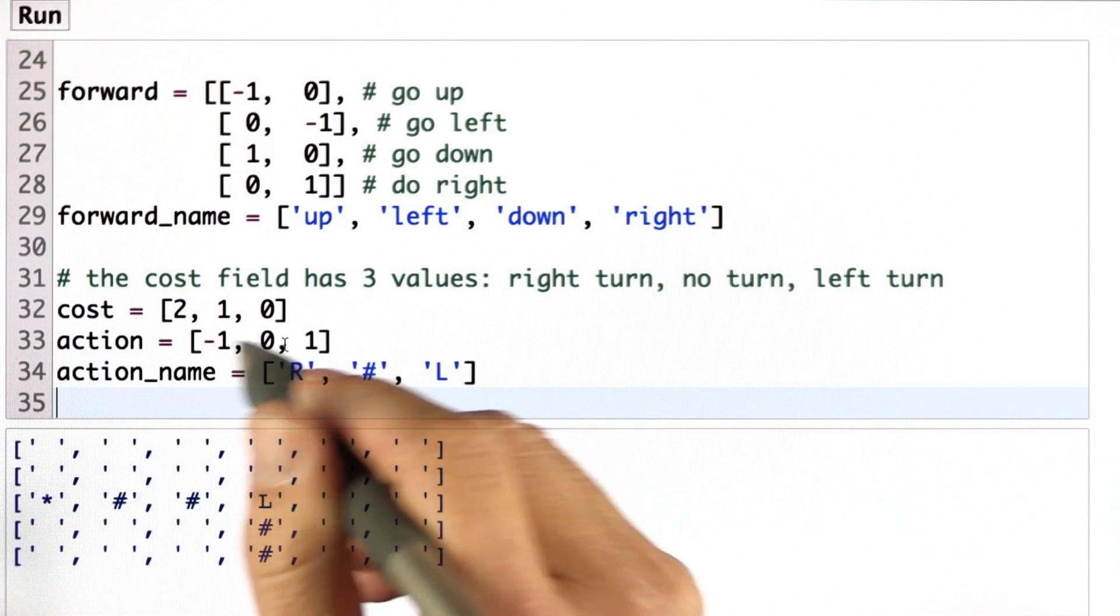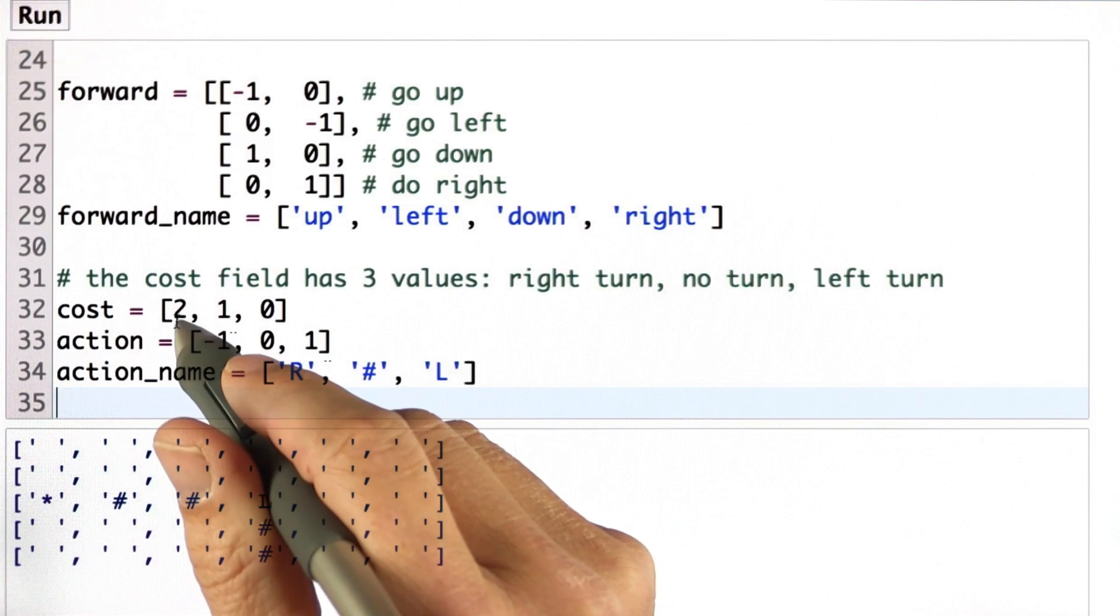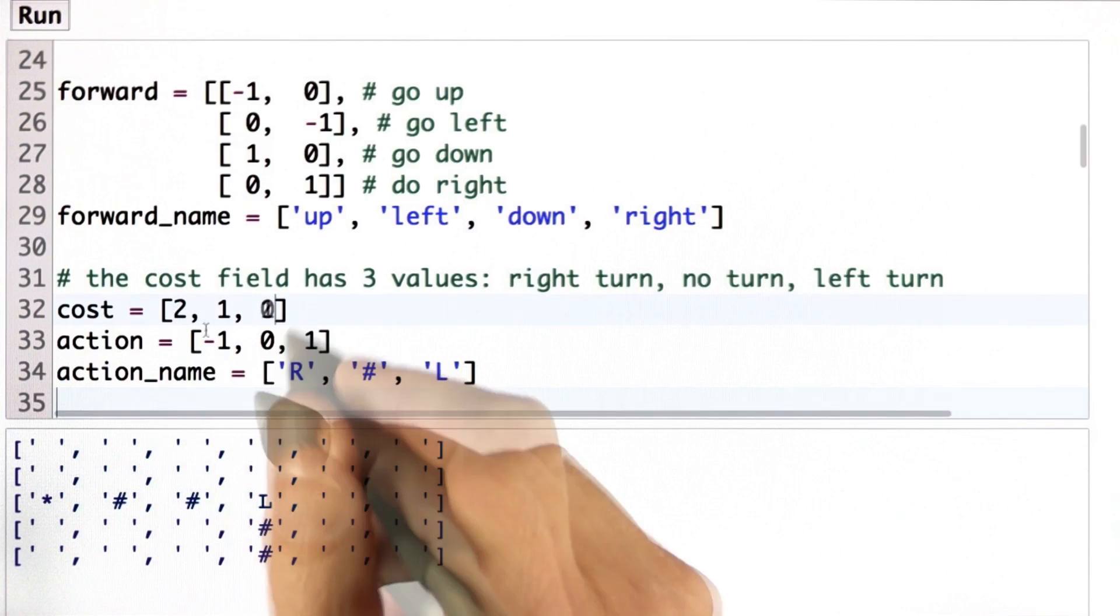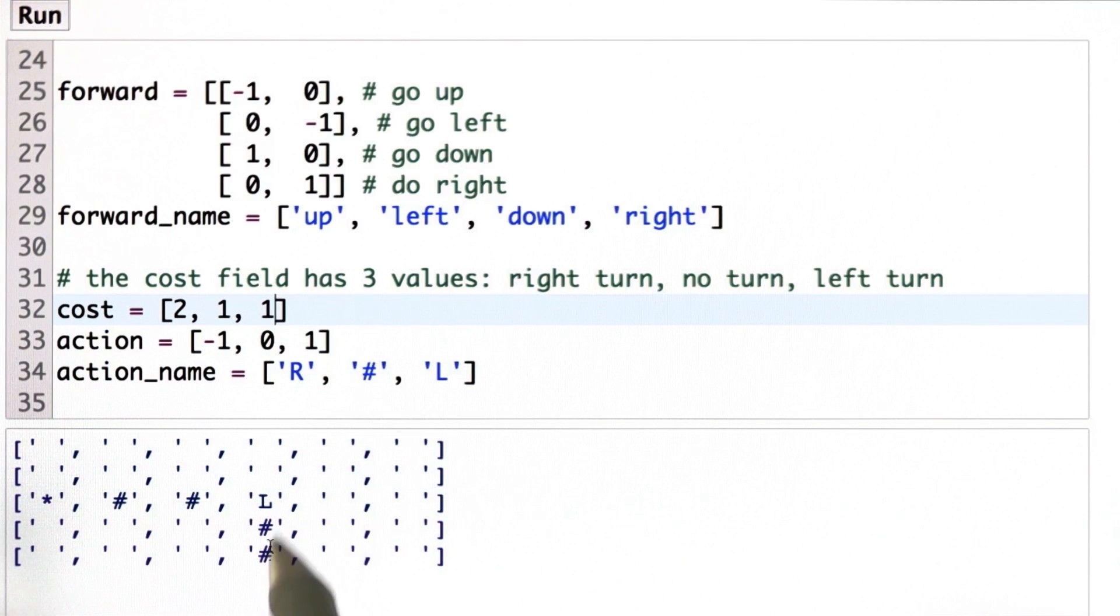These actions come with different costs. Right now, the left turn costs me 2, going straight costs me 1, and going right costs me 1 as well, which makes the left turn the preferred solution over here.